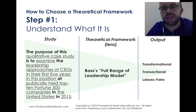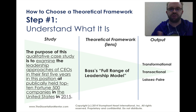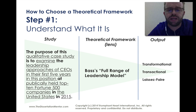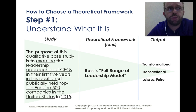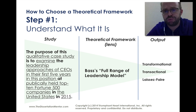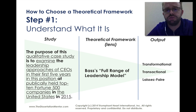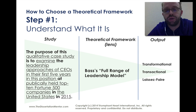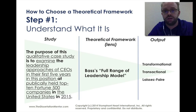Let's say we're doing this study about the leadership approaches of CEOs in the first five years of their work at top 10 Fortune 500 companies. We could choose a theoretical lens like Bass's Full Range Leadership Model. When we look at something through that model, we get three options — varying degrees of transformational, transactional, and laissez-faire styles of leadership. So when we look at this study through that lens, we get narrowed down to some very specific types of ways of seeing the results and the data of this study.